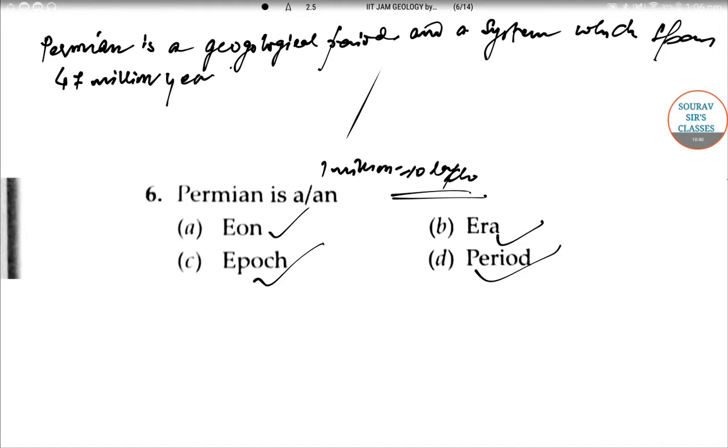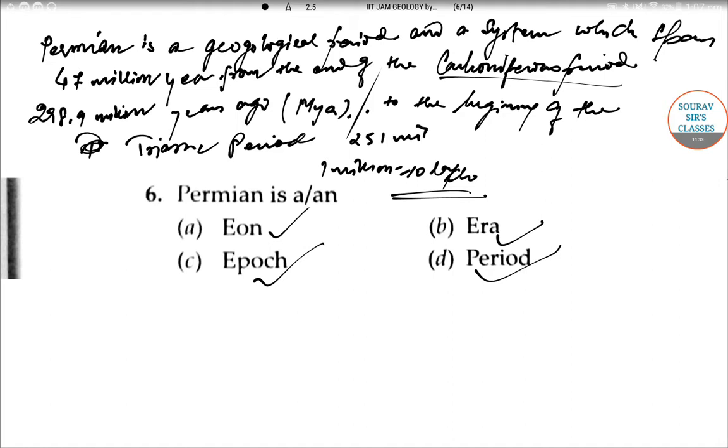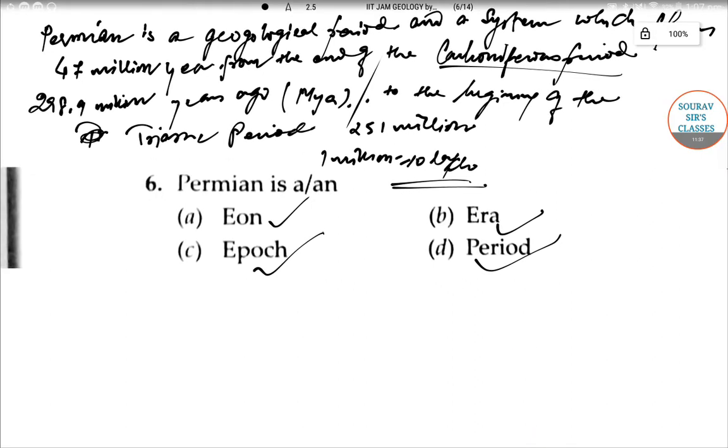47 million years from the end of the Carboniferous period, from the end of the Carboniferous period, 298.9 million years ago, which was known as MYA. And it lasted to the beginning of the Triassic period, the beginning of the Triassic period, that is 251 million years ago or 250 million years ago. So it was the last period of the Paleozoic era.